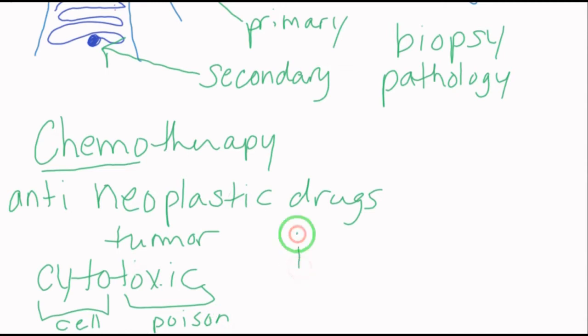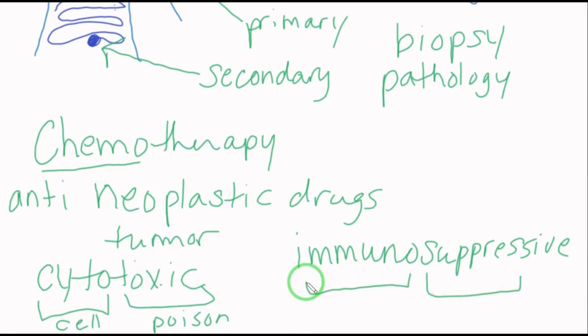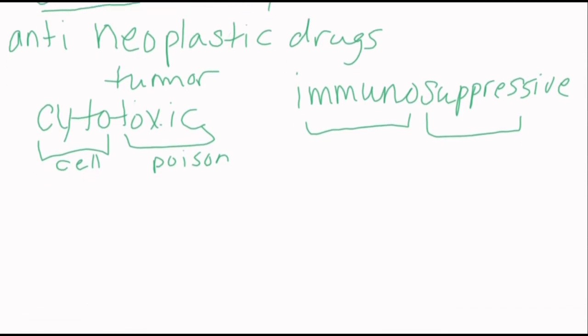But it is also immunosuppressive. Immunosuppressive means that it suppresses your immune system. And the reason for that is because one of the things that divides and grows the most rapidly in your body are your red blood cells and your white blood cells. And so these cytotoxic cells are also poisoning your immune system by killing off your ability to reproduce those cells so rapidly. So you will also find that some of the drugs that are supportive therapy to go with chemotherapy are going to replenish the immune system or protect the immune system from the cytotoxic drugs that we might be given.